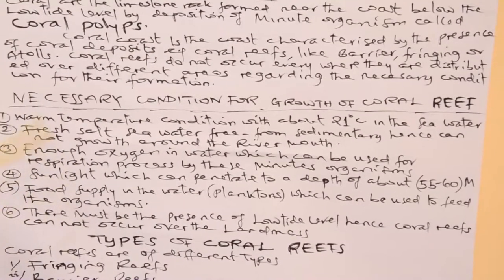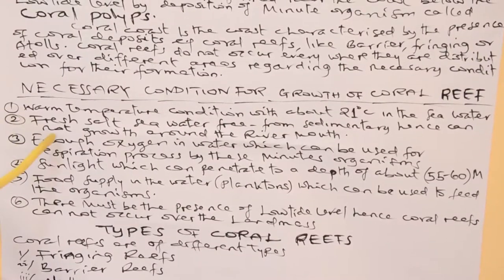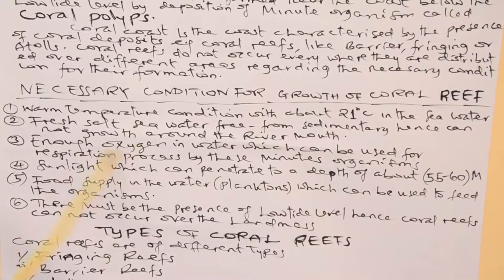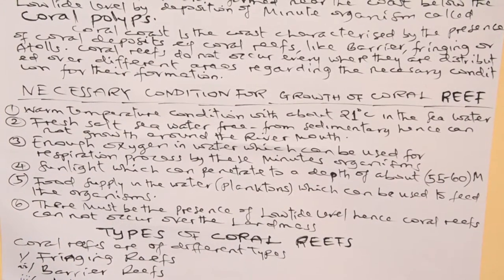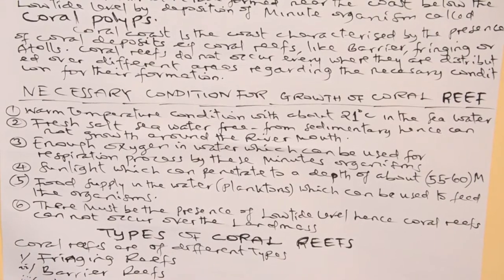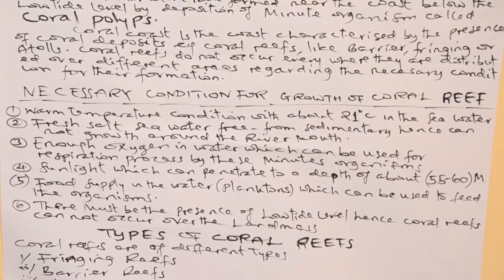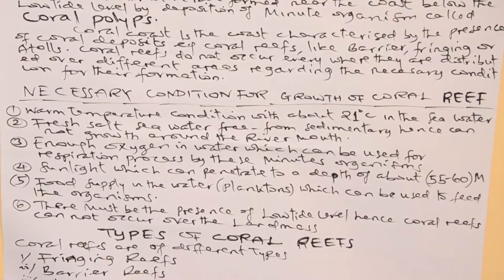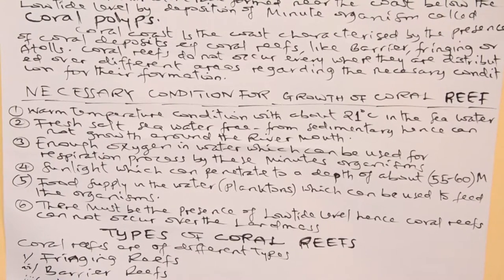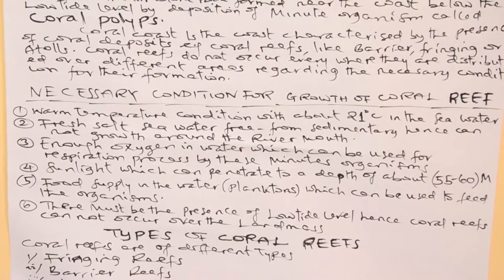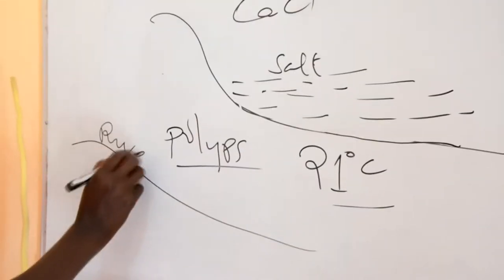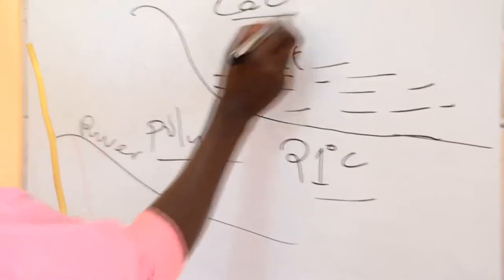Another condition for the growth of this organism is fresh salty sea water, free from sediment — hence it cannot grow around river mouths at sea. Dear students, this organism lives in places of salty water. It is prohibited from growing or no longer takes place nearby fresh water flowing in a river. It is just taking place where there is sea or ocean which consists of saline or salty water.